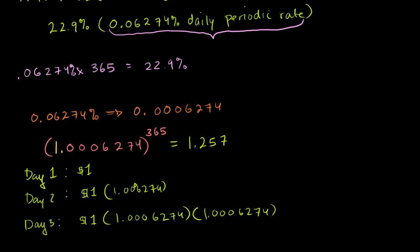The effective APR—the mathematically correct annual percentage rate—is 25.7%.